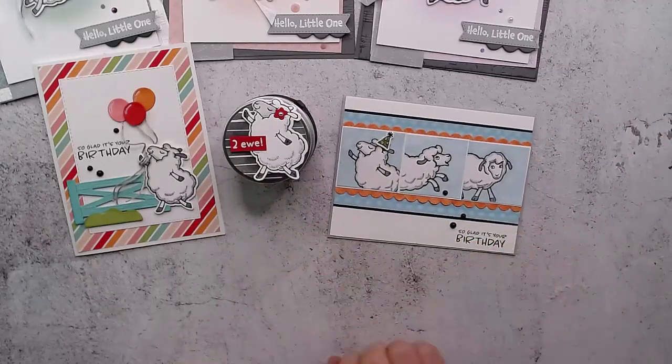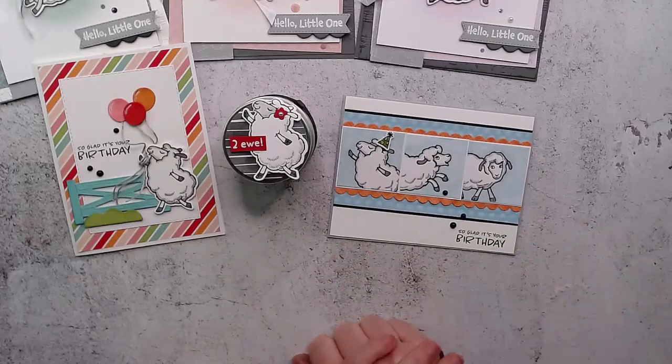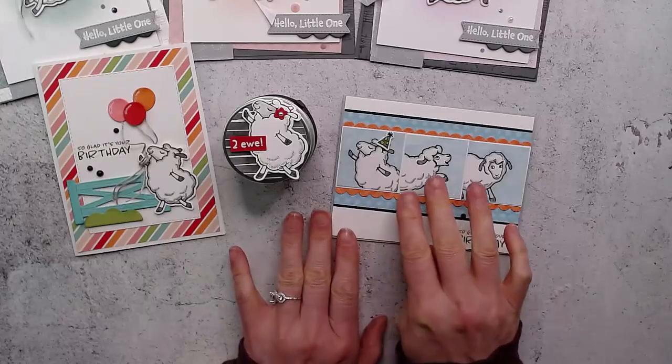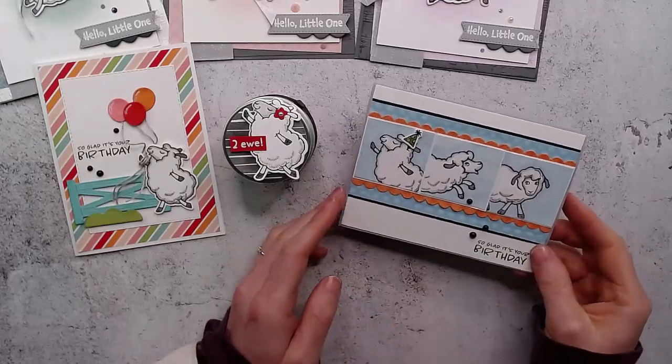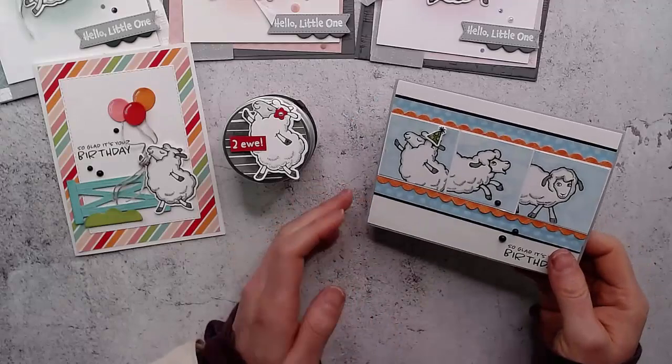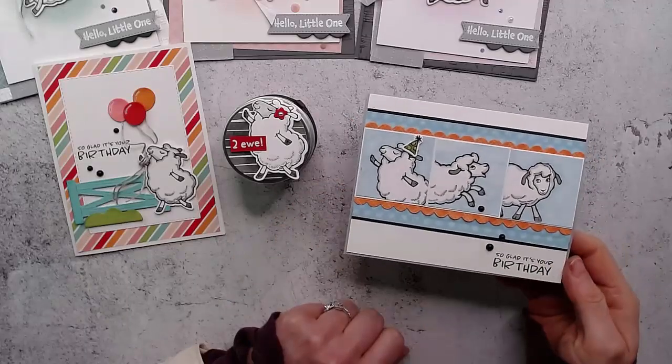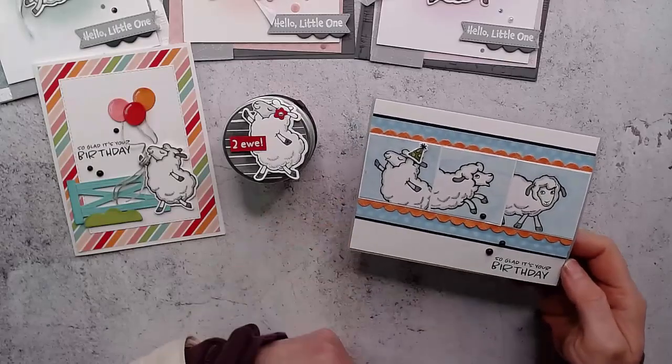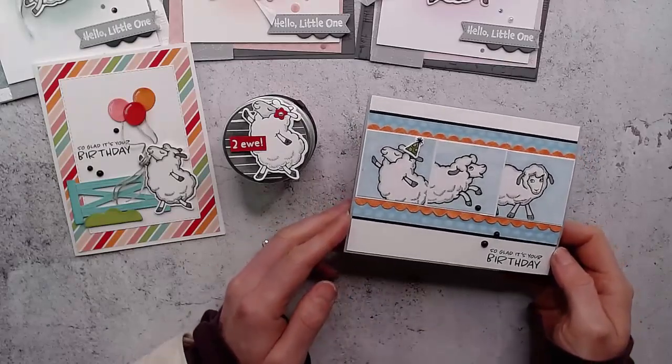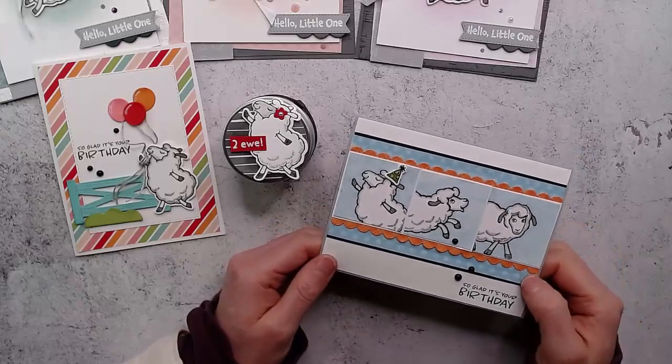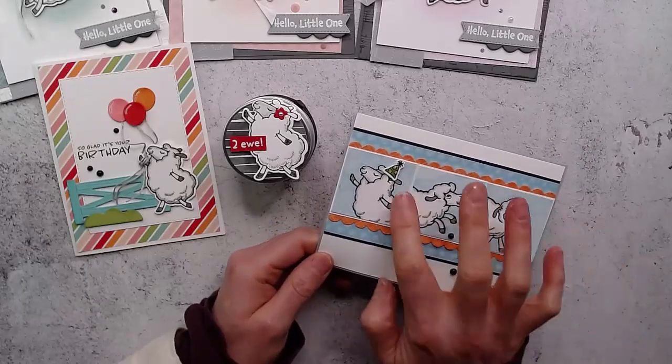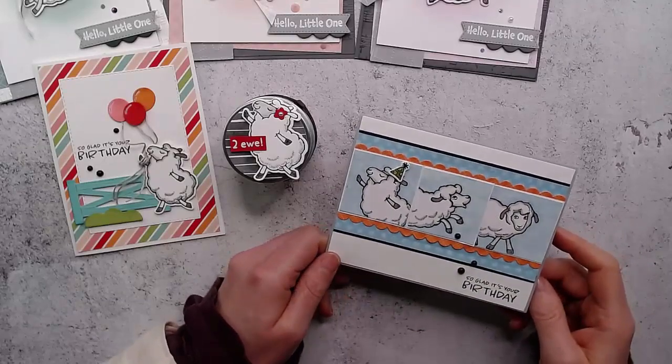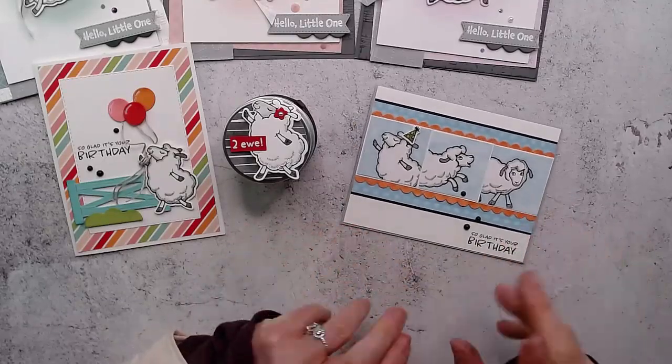And then the last one that I have for you, I was just doing kind of like a zoom call sort of look. Just did the three sheep and put them in the little panels. And I chose these colors because I was trying to make cards that would be suitable for a guy, just for something different. We do a lot of pretty cards, well I do a lot of pretty cards, and so wanted to use the oranges and the blues and then just that little pop of green on the hat. So I thought this would be good for a young man.